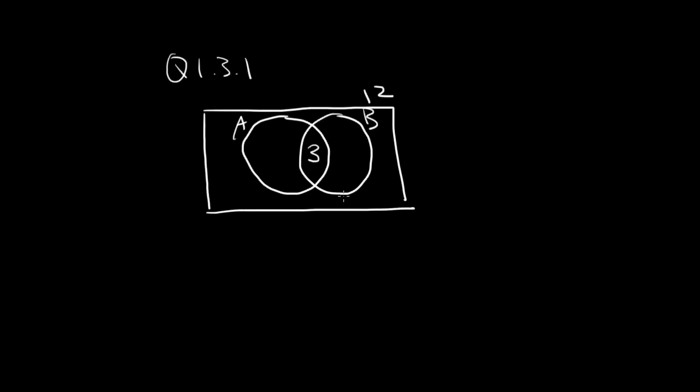We know that all of B is 5, so if 3 is in the middle here, that must leave 2 over here on the side.